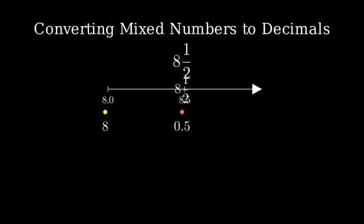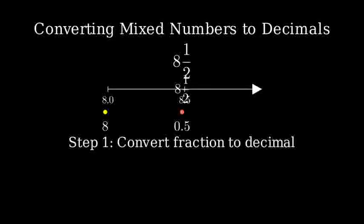Let's break this down step by step. Step 1, convert the fraction 1 half to a decimal. To do this, we divide the numerator, 1, by the denominator, 2. 1 divided by 2 equals 0.5.